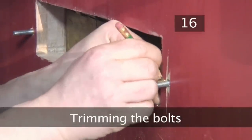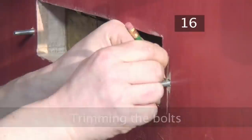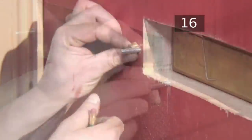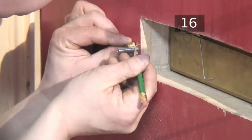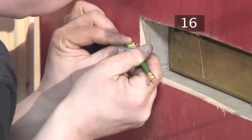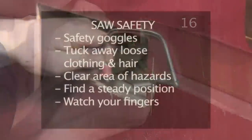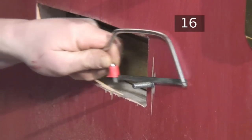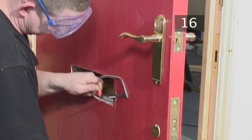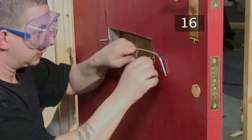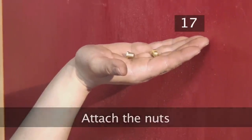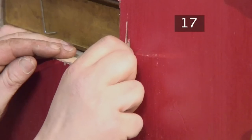Step 16. Trimming the bolts. If the bolts are too long, they will need to be trimmed. You will need to leave enough room for the nuts, so check the depth of the nuts and mark this on the bolts. Remember your saw safety. Carefully saw off the excess length. Step 17. Attach the nuts. Screw the nuts onto the back of the bolts until tight.